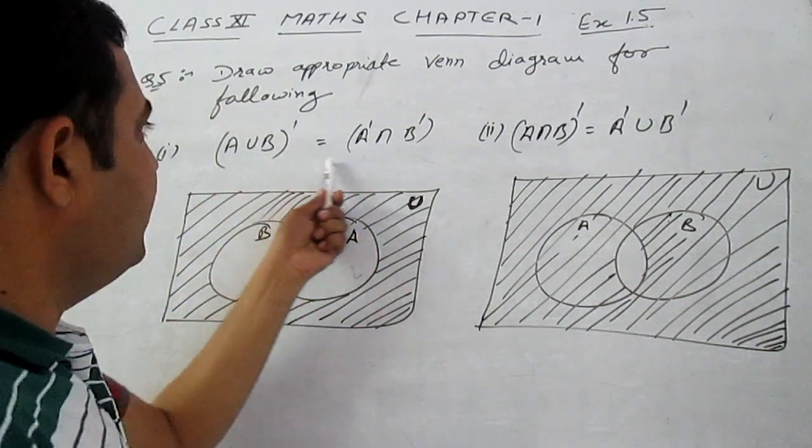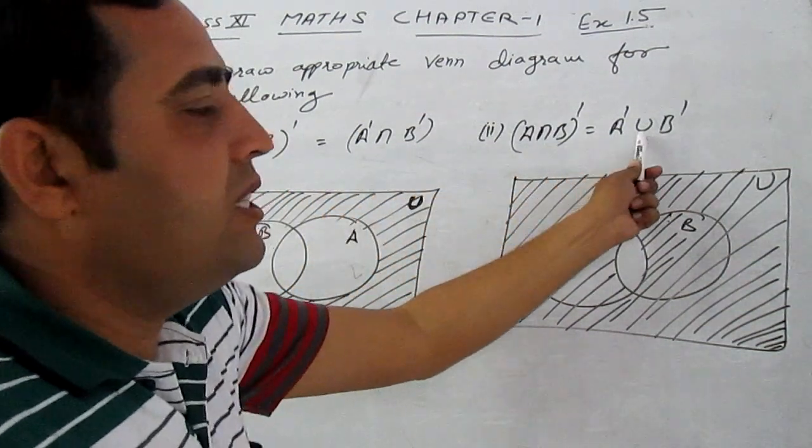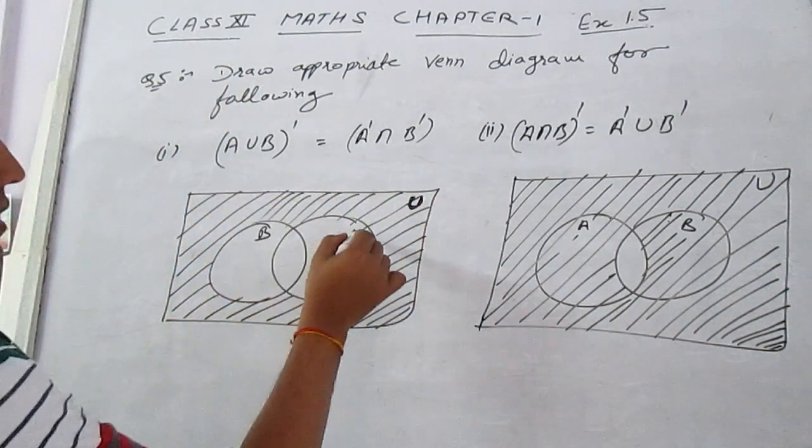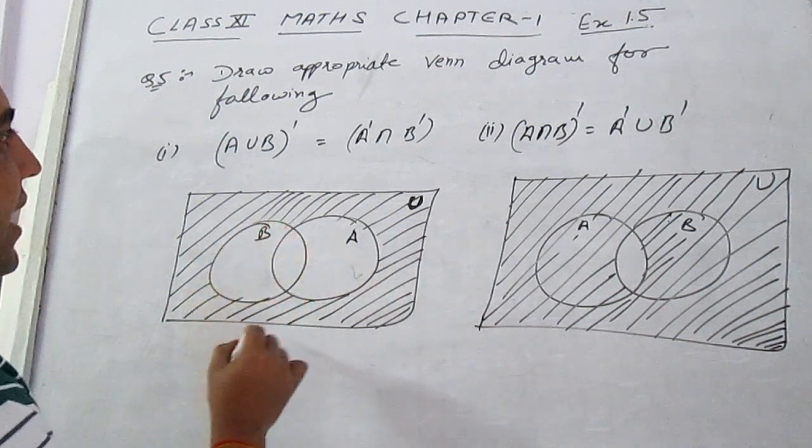Therefore, the diagrams for both these will be the same. This is the universal set, this is subset A, this is subset B.